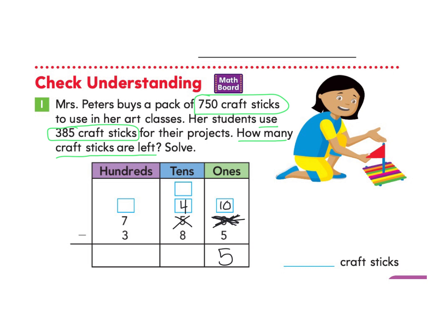Now the tens column: we have 4 tens and need to take away 8. We can't take 8 from 4, so we go next door to the hundreds. There are 7 hundreds — we cross out the 7 and make it 6. We take one hundred, which is 10 tens, and move it to the tens. Now we have 10 plus 4, which makes 14. We take 14 and subtract 8, which gives us 6. The last part: 6 hundreds take away 3 hundreds equals 3. So our answer is 365 craft sticks.